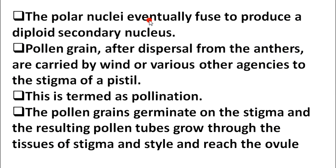The polar nuclei eventually fuse to produce a diploid secondary nucleus — meaning the ploidy is 2n. After pollen grains are dispersed from the anthers, they are carried by wind or various other agencies to the stigma of the pistil. This describes the pollination process.